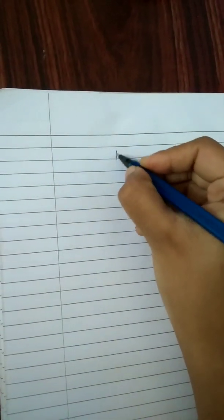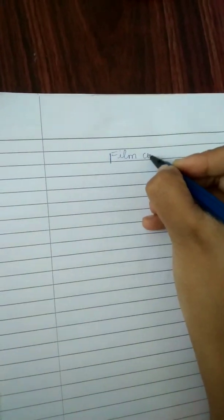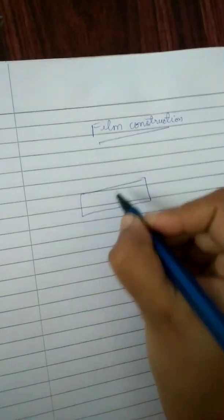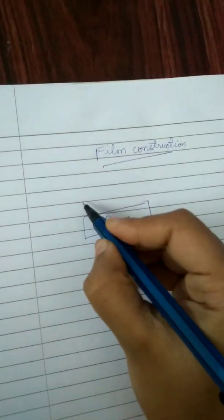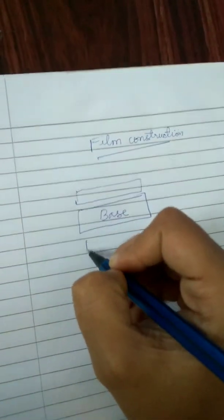So we are going to see construction of x-ray film. Consider the innermost layer of the film is base and there is emulsion layer on top of base.